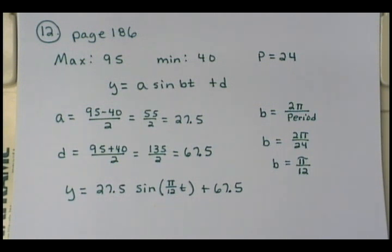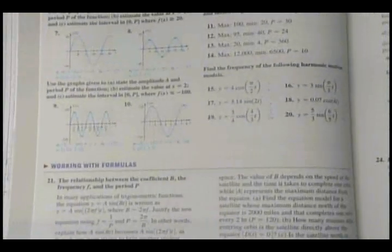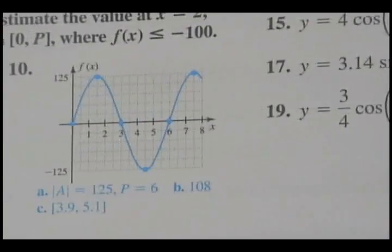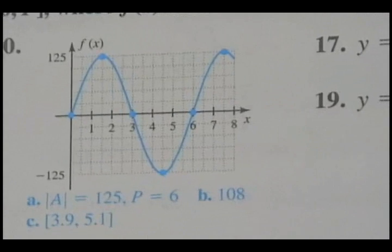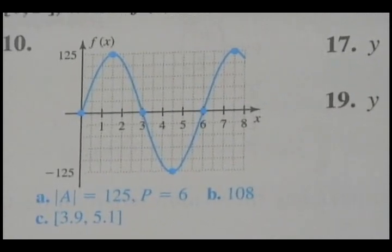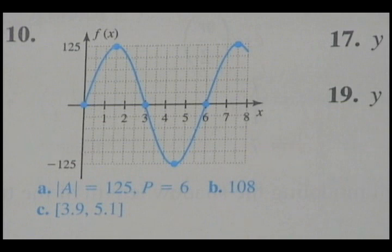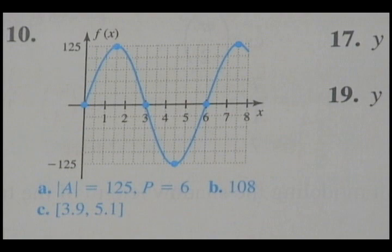Turning to page 186, let's look at problem number 10. For this graph, part A asks you to state the amplitude and the period. Part B is to estimate the value at x equals 2. And part C is to estimate the interval from 0 to p where f of x is less than or equal to negative 100.